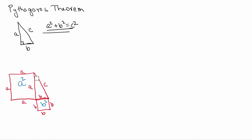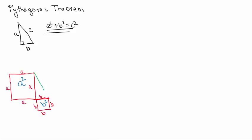Similarly, let me draw side C in a different colour so it's easier to represent. I draw side C here and put up a square on it, which ends up looking like this, with each of its sides being C — and hence this is C squared. Let me pull this C squared square out and redraw it.